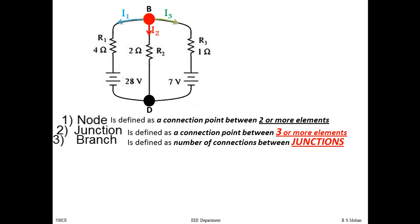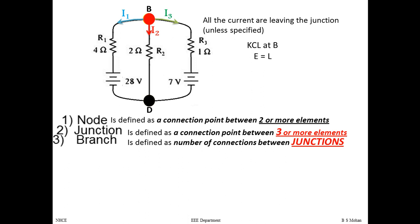We assume one junction as the reference — point D is the ground potential (black), and point B has the highest or positive potential. Since current flows from positive to negative, we assume current flows from B down to D. Thus all three currents I1, I2, and I3 are assumed to leave junction B. Applying KCL at point B: 0 = I1 + I2 + I3.